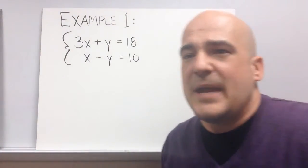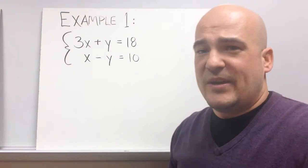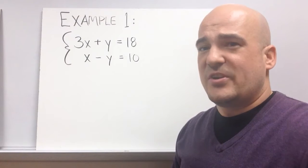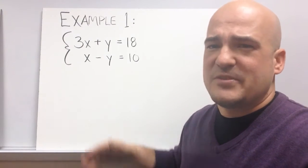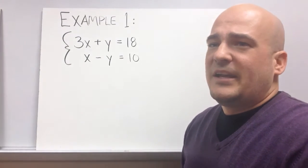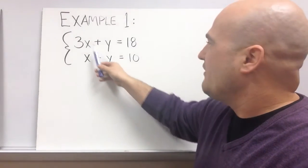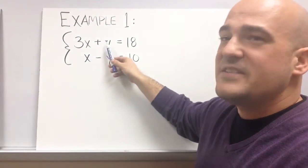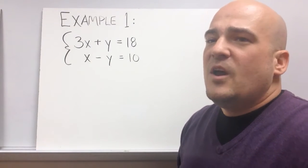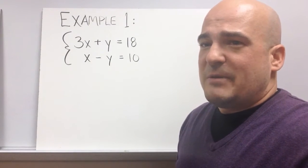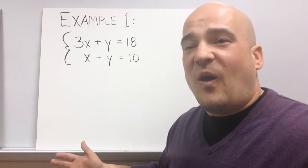Here's an example of a systems problem, and both of these equations are written in standard form. I'm going to show you the easy way to solve this rather than solving for a variable and then substituting it into the other problem. In elimination, the first step is to make sure that your equations are lined up correctly — x's on top of x's, y's on top of y's, and constants on top of constants. The next step, step number two, is we're going to add these two equations. Today we're simply going to add all of them.